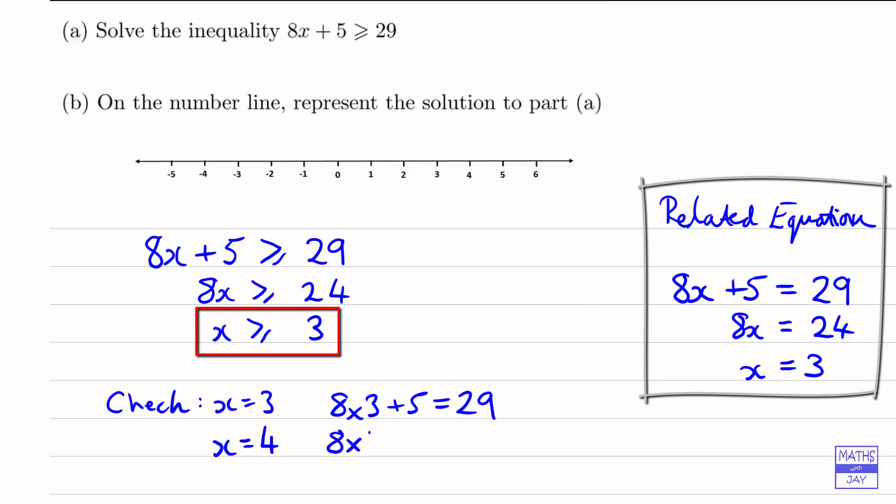And see what we get. So 8 times 4 plus 5, putting the value for x into the original left hand side, so 8x plus 5 is 8 times 4 plus 5. That's 32 plus 5, so that's going to be 37, and that is greater than 29.